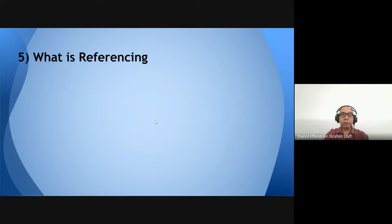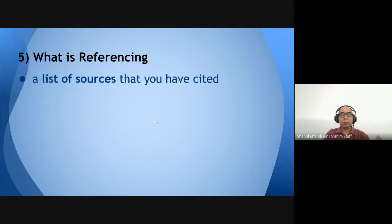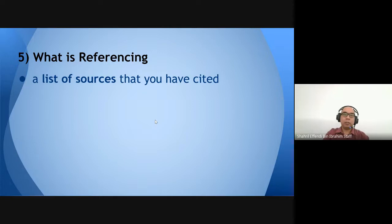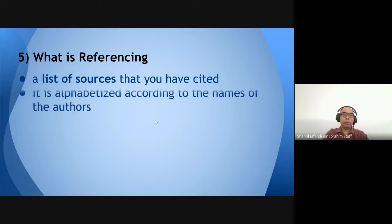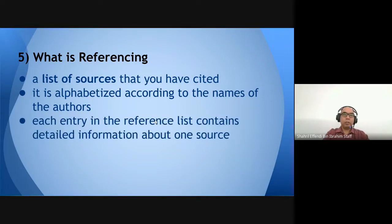What is referencing? It is a list of sources that you have cited. Every source cited in the body of your writing — such as Kotler or Jones — must appear in the reference list at the back with full details: the title of the book or journal, and so on. If you have 10 in-text citations, there should be 10 sources in your reference list. The list is alphabetized according to the author's name.